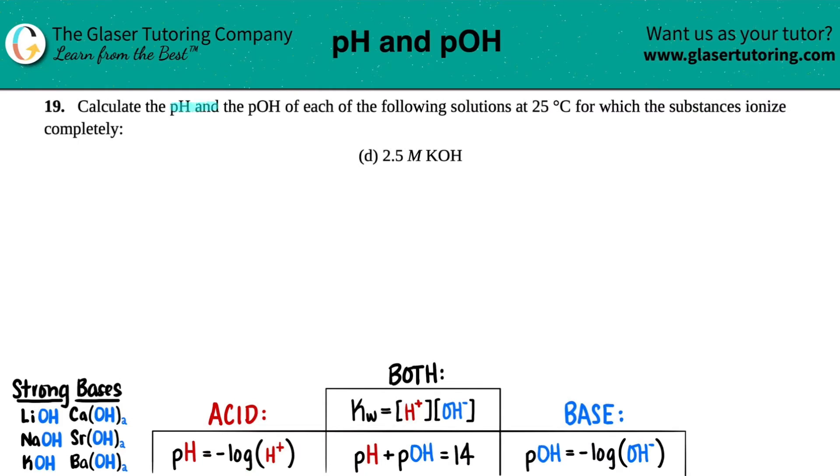Number 19, calculate the pH and the pOH of each of the following solutions at 25 degrees Celsius for which the substances ionize completely, and then they give us letter D. So we just have to find the pH and the pOH of 2.5 molarity of potassium hydroxide, which is KOH.